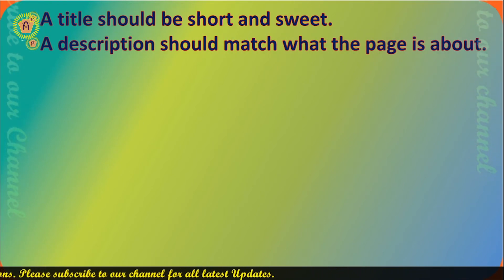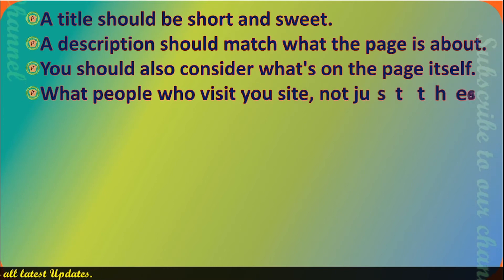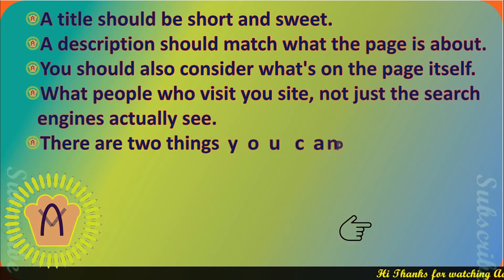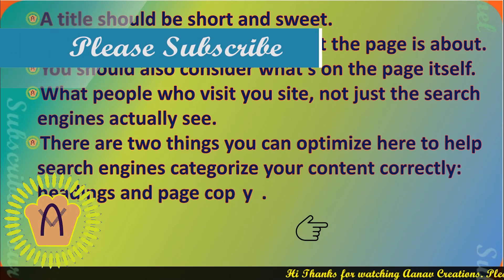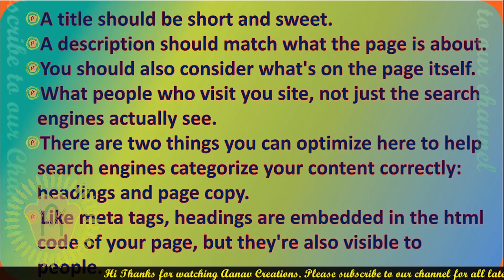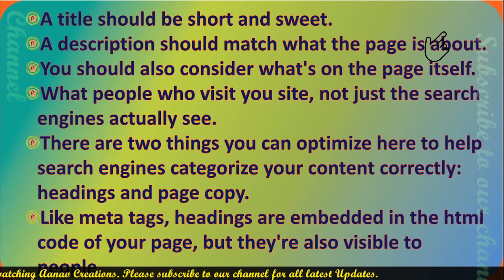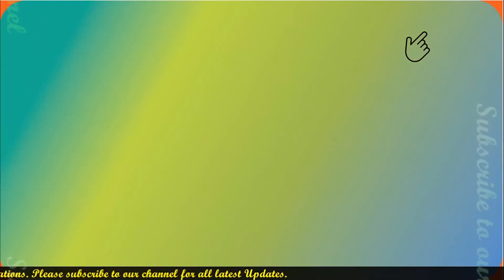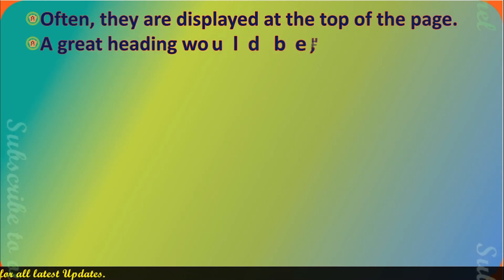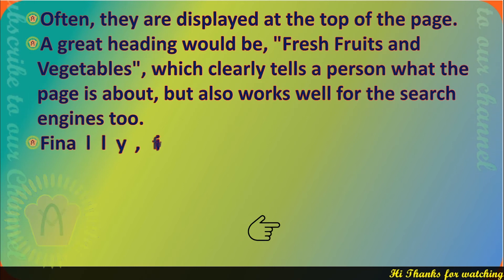You should also consider what's on the page itself — what the people who visit your site, not just the search engines, actually see. There are two things you can optimize here to help search engines categorize your content correctly: headings and page copy. Like meta tags, headings are embedded in the HTML code of your page, but they are also visible to people. Often they are displayed at the top of the page. A great heading would be 'Fresh Fruits and Vegetables,' which clearly tells a person what the page is about and also works well for search engines.